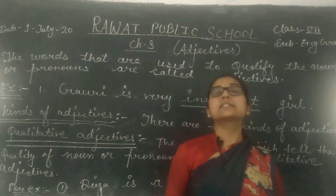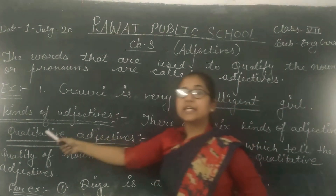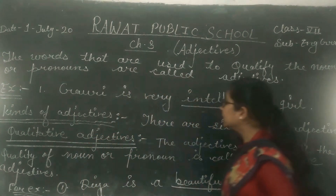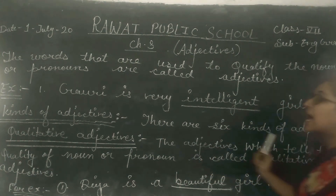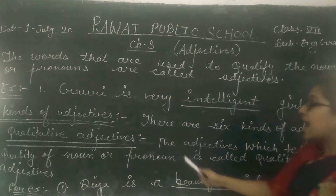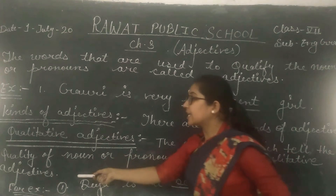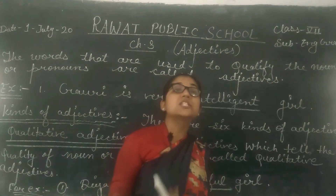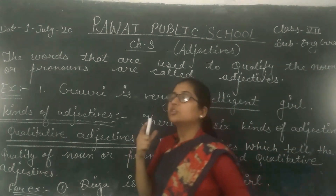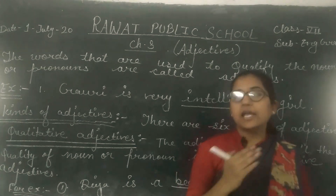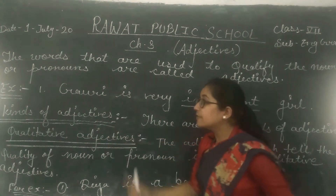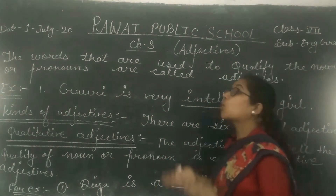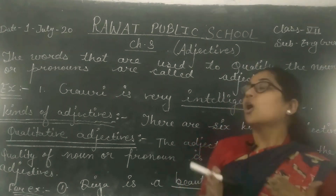There are 6 kinds of Adjectives. First is Qualitative Adjective. The Adjectives which tell the quality of a noun or pronoun are called Qualitative Adjectives. Qualitative tells us the quality of the noun or pronoun. They show quality of noun or pronoun.